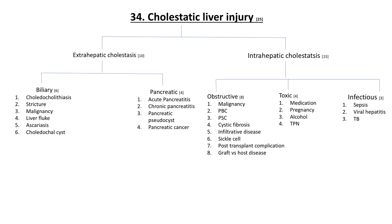Cholestatic liver injury refers to the predominance of serum alkaline phosphatase elevation in comparison with serum aminotransferases. Serum bilirubin levels are usually also elevated. Diseases of the hepatobiliary system and bone are the most common causes of elevated serum alkaline phosphatase. Elevated serum gamma-glutamyl transferase, also known as five-prime nucleotidase, can confirm a hepatobiliary source. Clinical manifestations largely depend on underlying cause but include pruritus, fatigue, dark-colored urine, acholic or pale stool, jaundice, and palpable dilatation of the gallbladder.